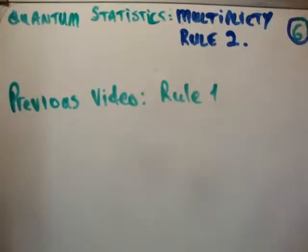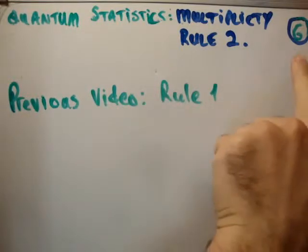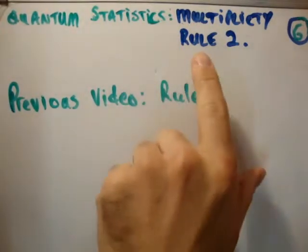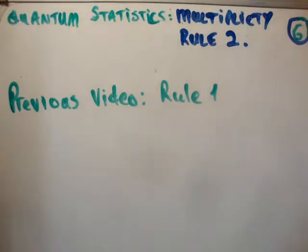Okay, in this video I'm going to continue my tutorial videos on quantum statistics. This is video number 6 in the series, and we're talking about multiplicity rule number 2. The previous video was multiplicity rule number 1.